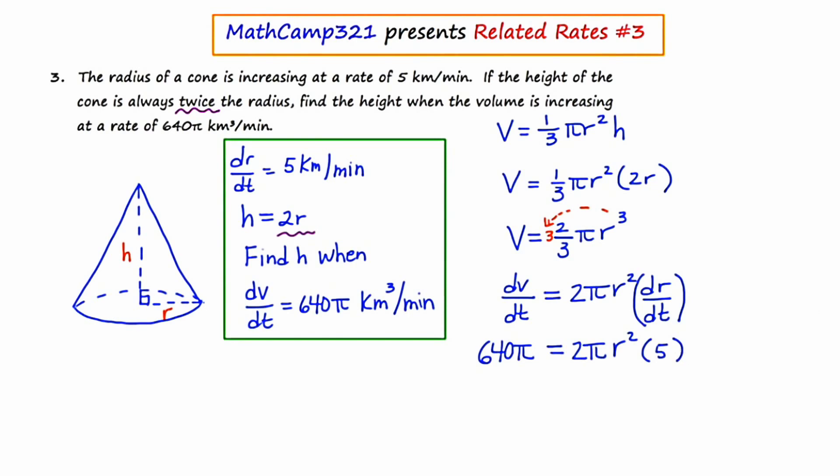So my game plan is to solve for R, and whatever I get, I'm just going to double and that's going to give me H, which is really what I want. So at this stage of the game, I'm going to say 640π is equal to 10π R squared. The π's are going to cancel out. And if I divide both sides by 10, I get R squared is equal to 64, which means that R is going to equal 8.